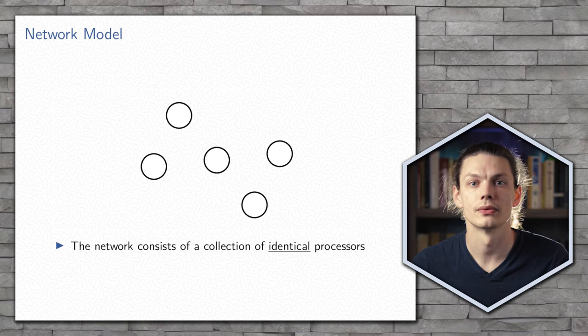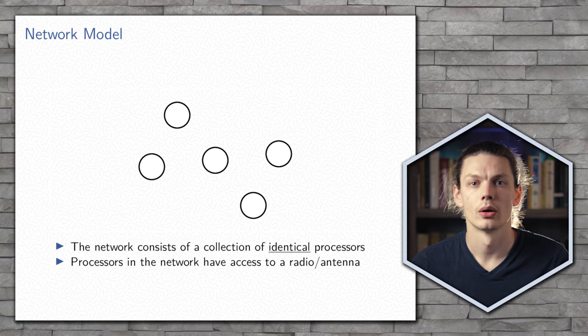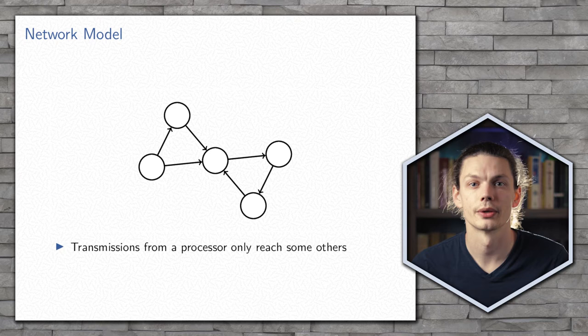The radio network is comprised of a bunch of processors that are all identical, and we can't distinguish between any two of them, each of which is equipped with a radio that it can use to transmit messages to some of its neighbors.